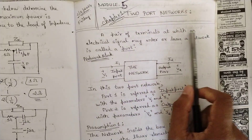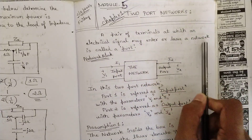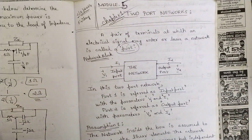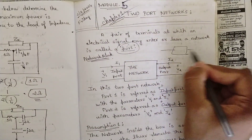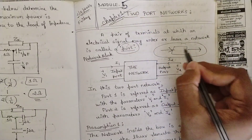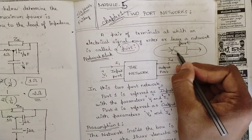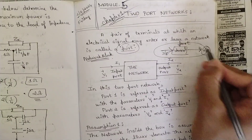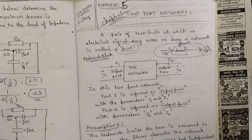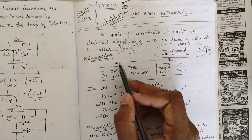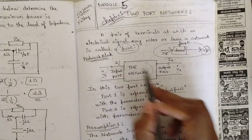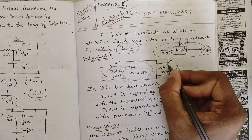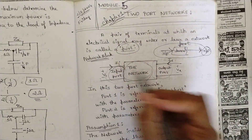A pair of terminals at which an electric signal may enter or leave a network is called a port. A port is like a channel where an input is provided and an output is taken. A network block with parameters i1 and v1 represents an input port, and the output port carries current i2. These two are the input and output ports.